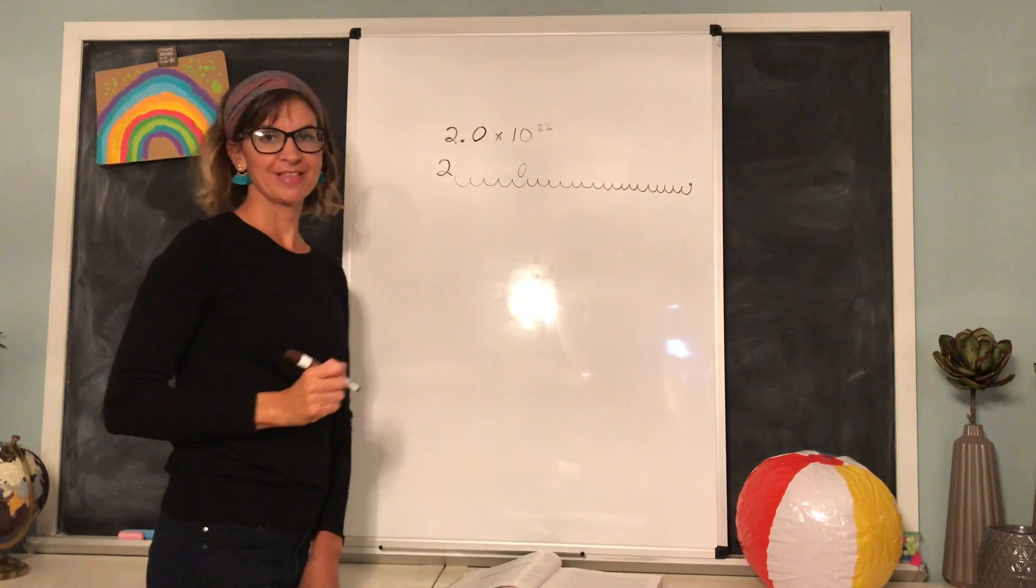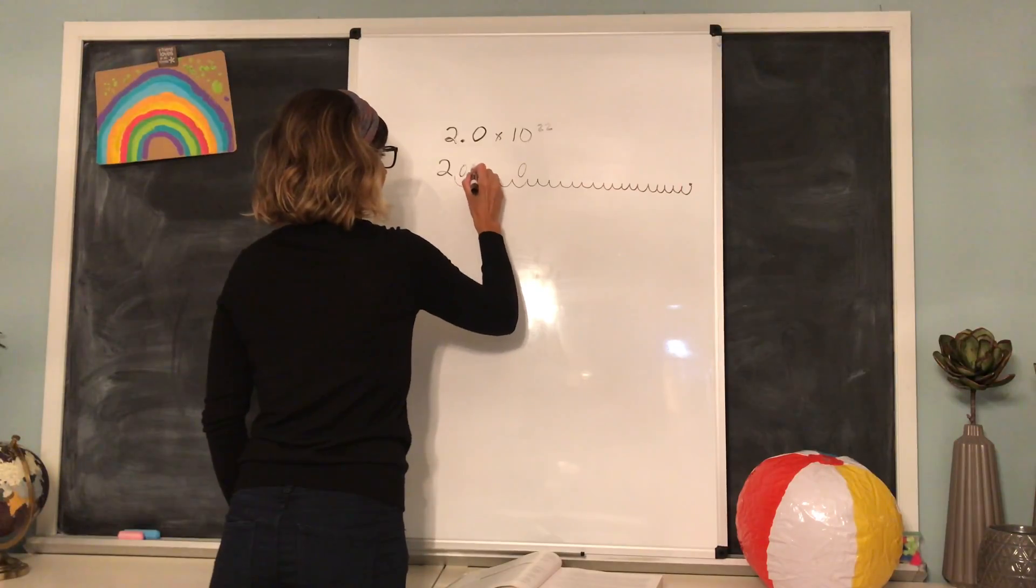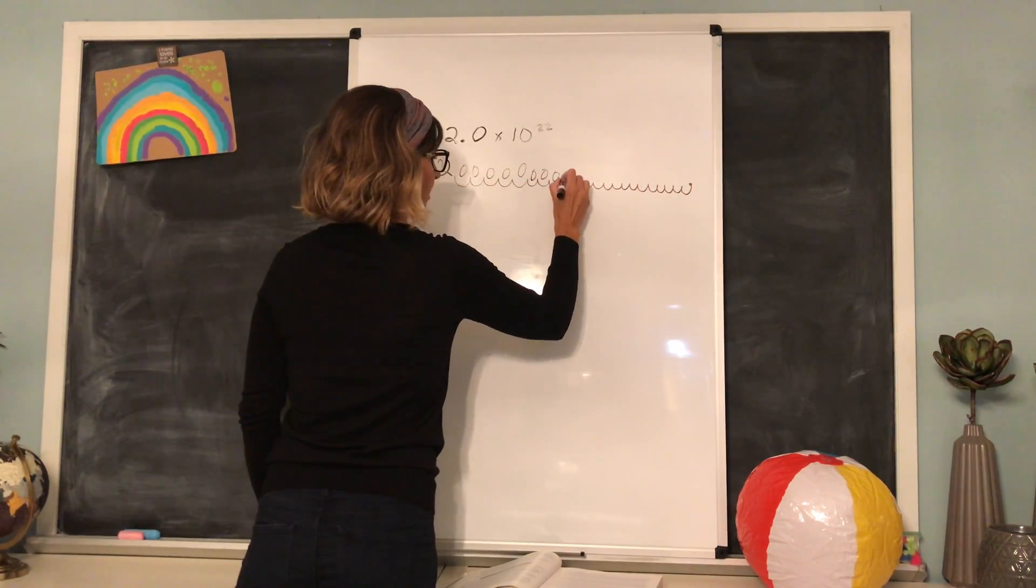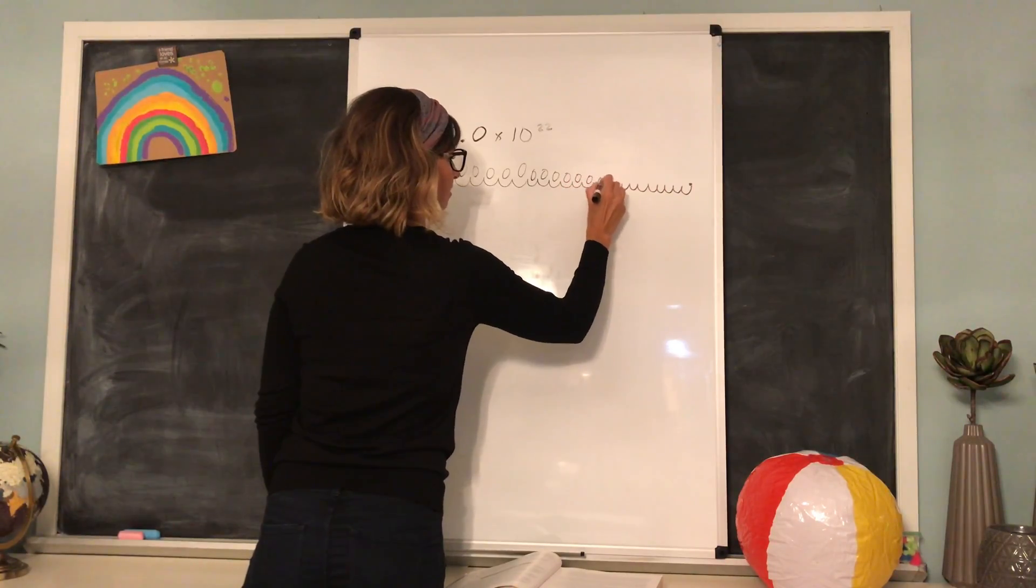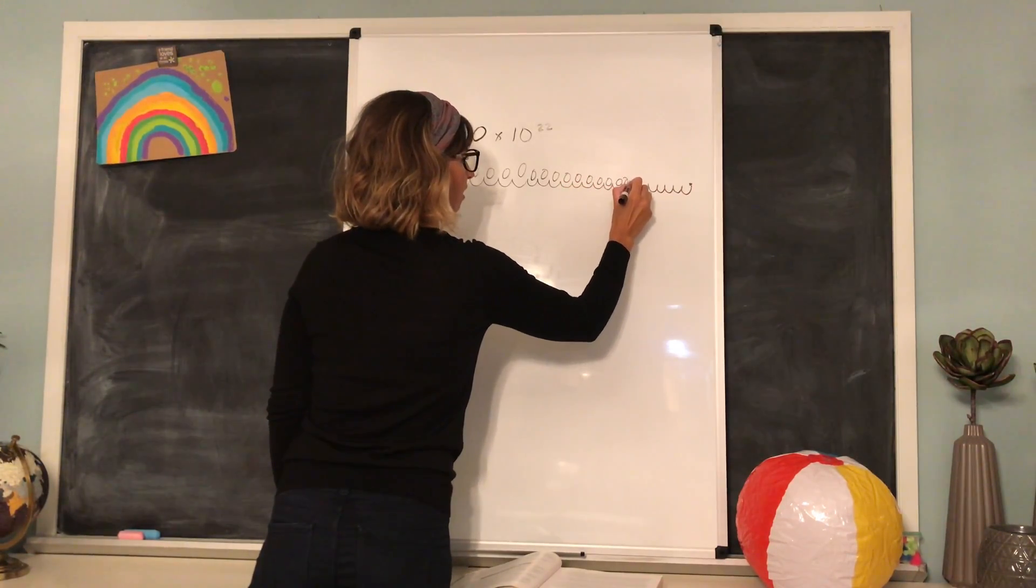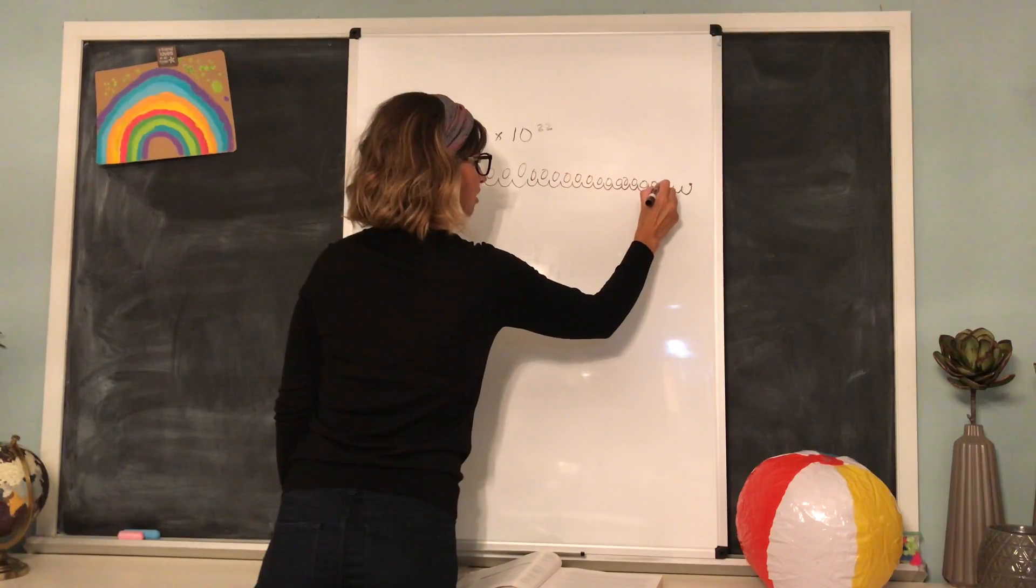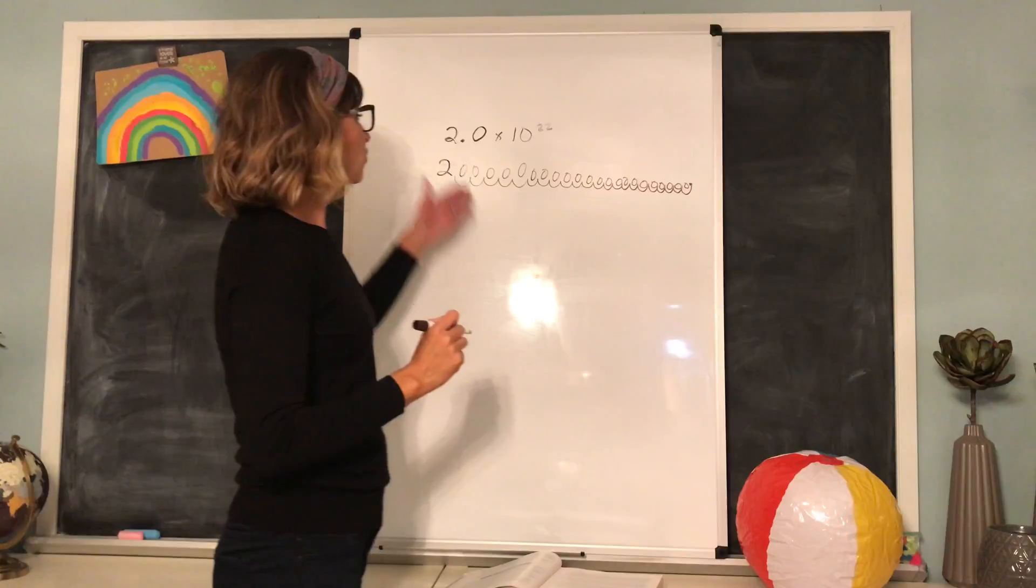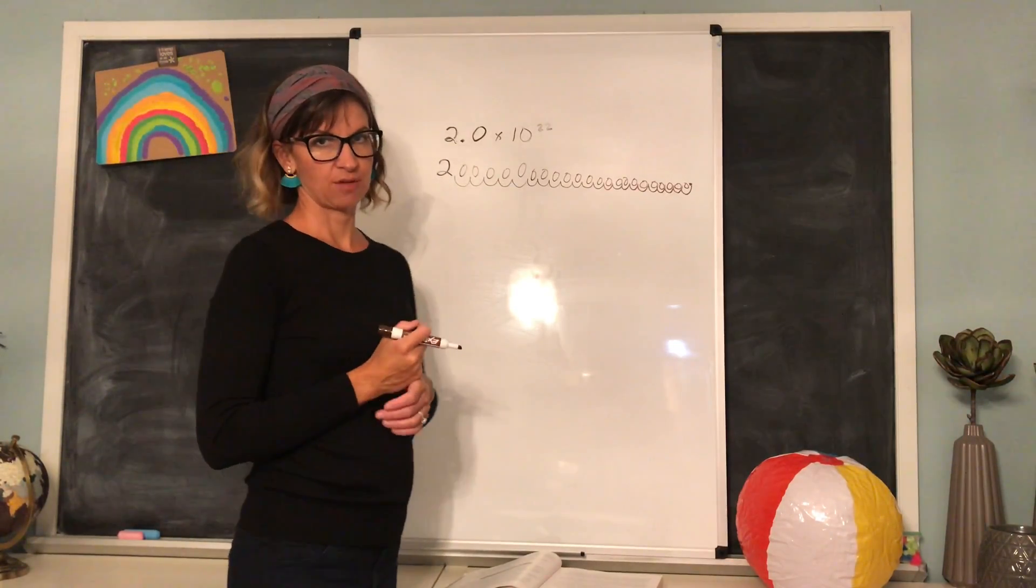So the decimal place would be right there, and then to actually write the number out, we have to fill in all the 0s. Obviously we use scientific notation because if we didn't, we'd be writing all of these numbers and digits, and it would take a very long time to get anything done. So we rely on scientific notation.